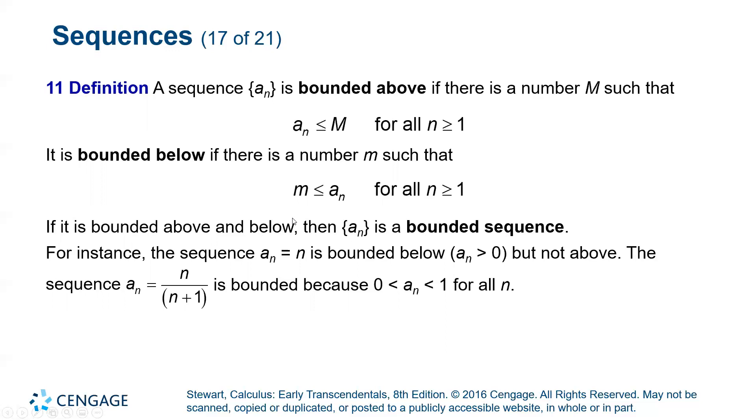An example, a sub n equals n is bounded below because every single value in this sequence is one or greater. But there is no upper bound because this grows to infinity.